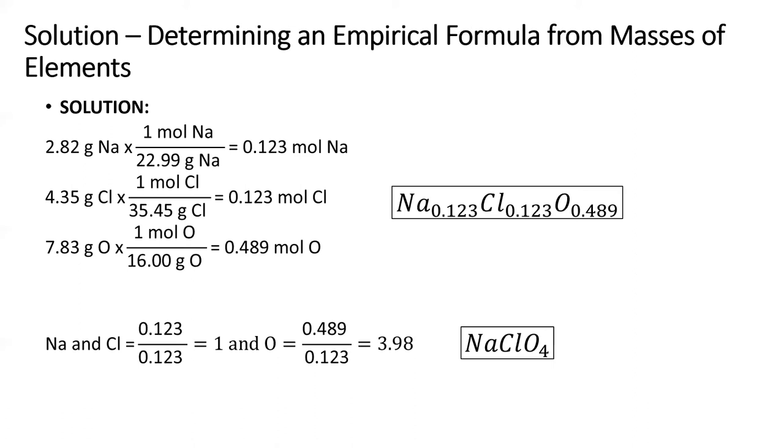Now, the second part of this question asks what the name of that compound is. Na is sodium. ClO4 minus is perchlorate, so this is sodium perchlorate.